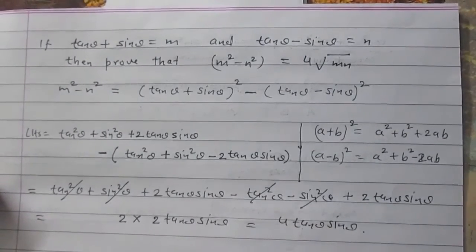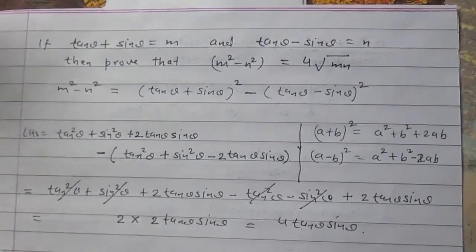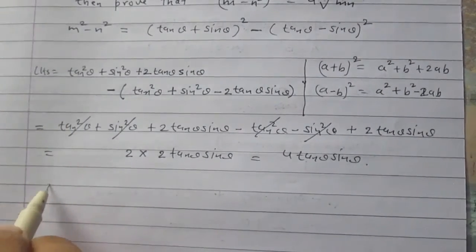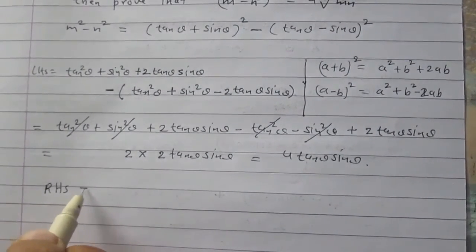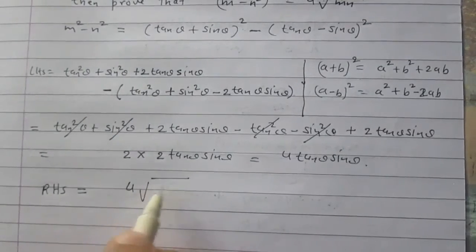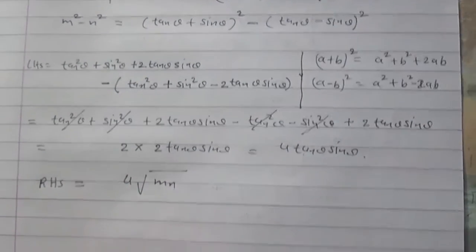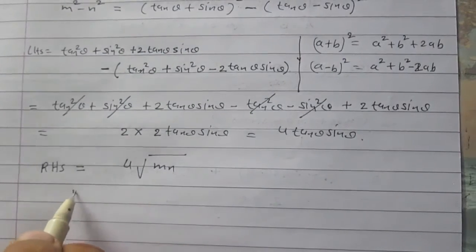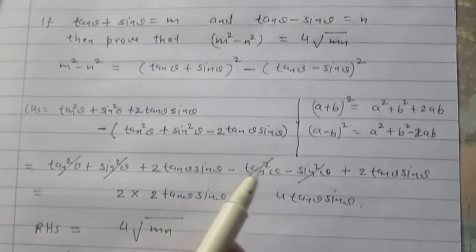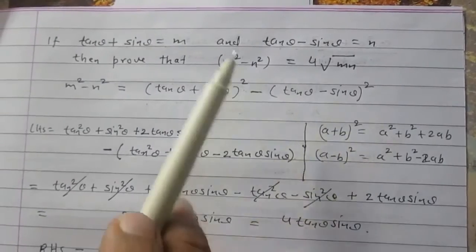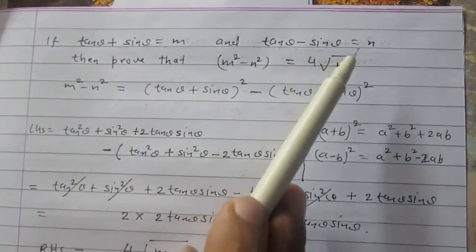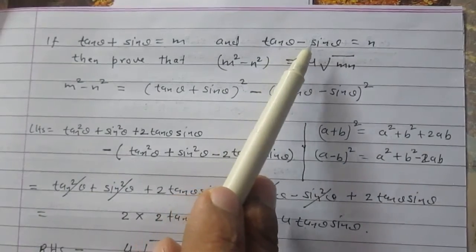Now consider the right hand side, which is 4√(mn). Let us first compute mn. Once again, the value of m is tan θ + sin θ and the value of n is tan θ - sin θ.